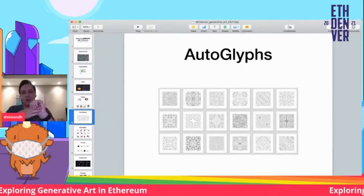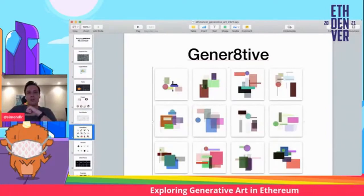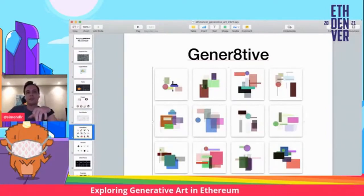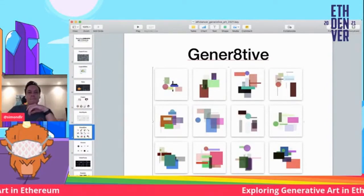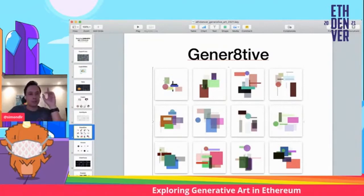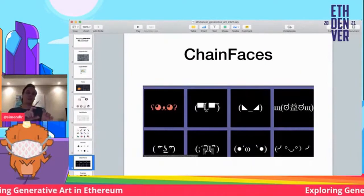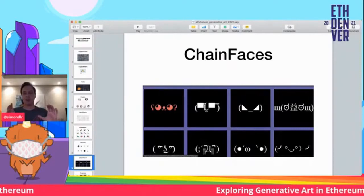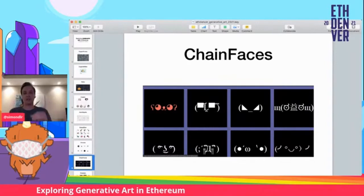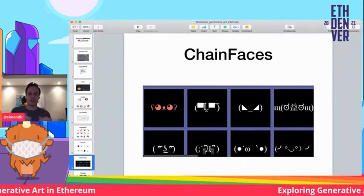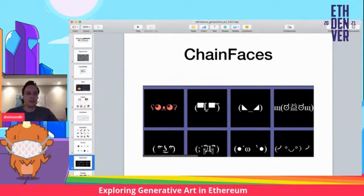Autoglyphs spawned a bunch of fast followers like Colorgliss and other projects. One of them was Generative, which followed a similar pattern but drew what's called K-Compositions. Then there were others like Chainfaces, which instead of storing symbols directly on-chain, literally stored specific Unicode or ASCII art directly on it. So if you go into the smart contract now in Etherscan and look up a specific token ID, you will see one of these faces — and this was also automatically generated.